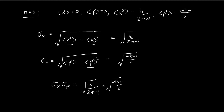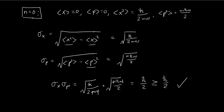Once you cancel these terms out, you see that you have 2 h-bars, so it becomes h-bar. You have 2 square roots of 2, so they become 2. So this product is equal to h-bar divided by 2. Of course, this is always larger than or equal to h-bar over 2, so the uncertainty principle is satisfied for the ground stationary state. We've finished half of the problem.